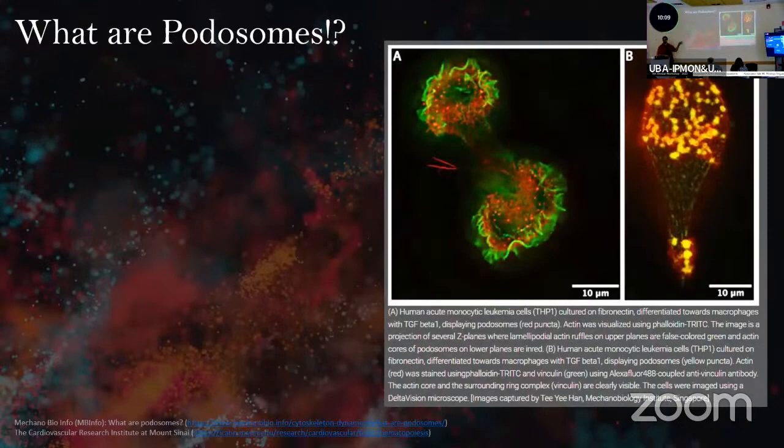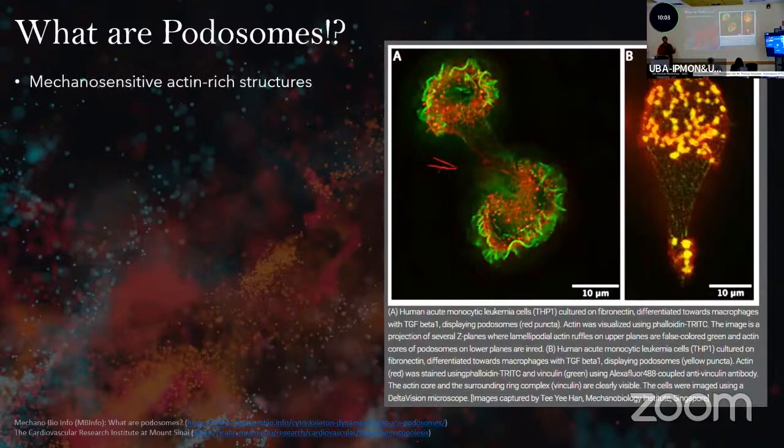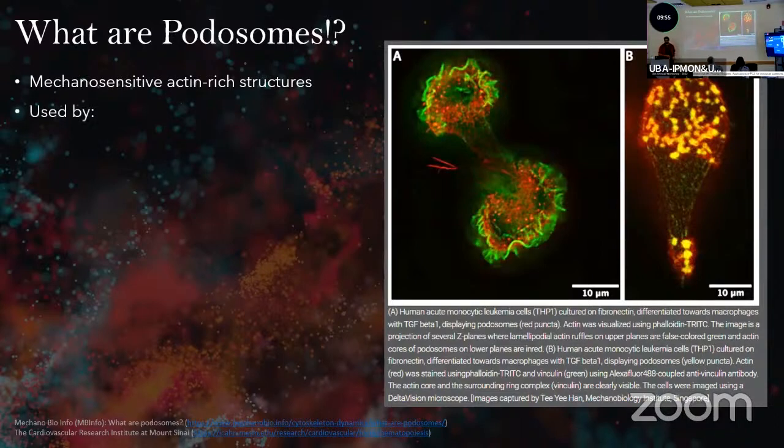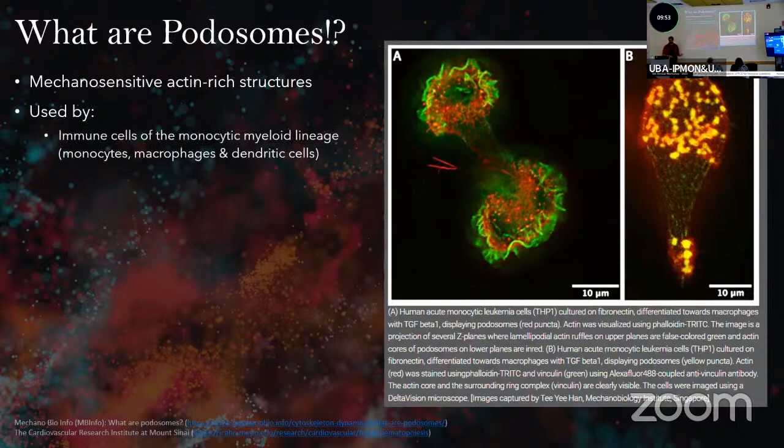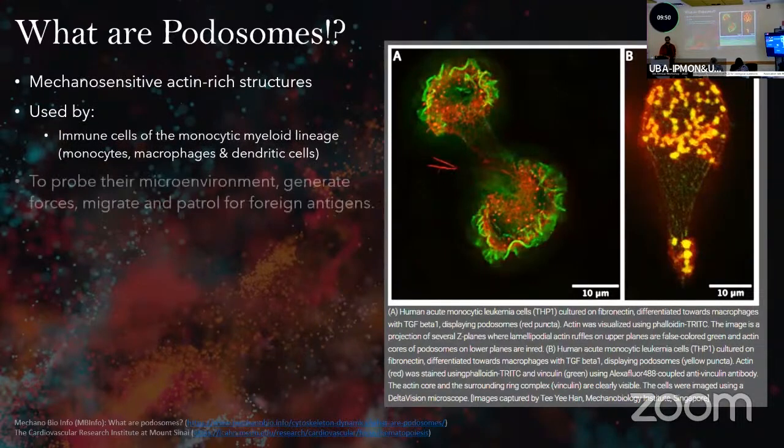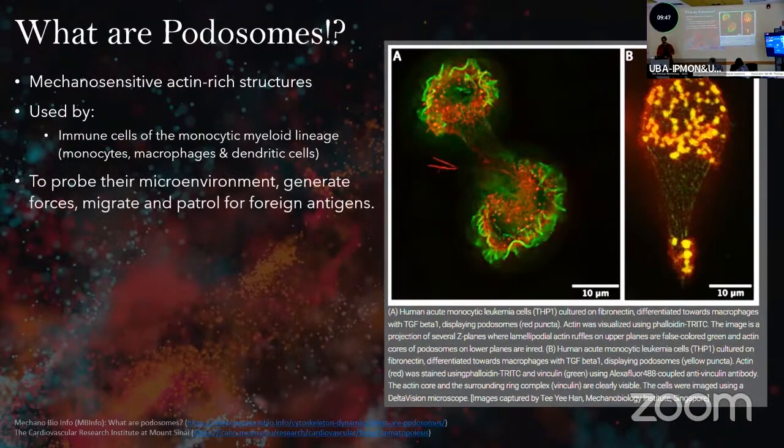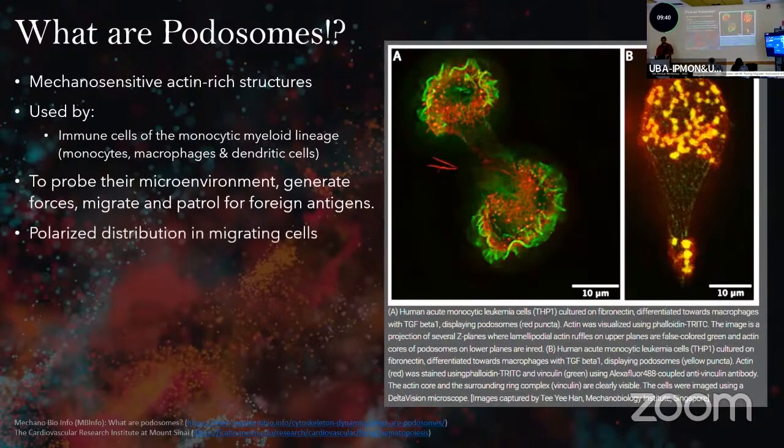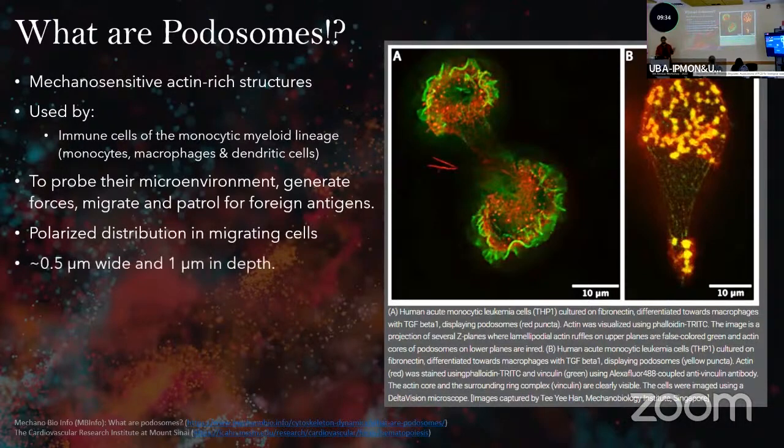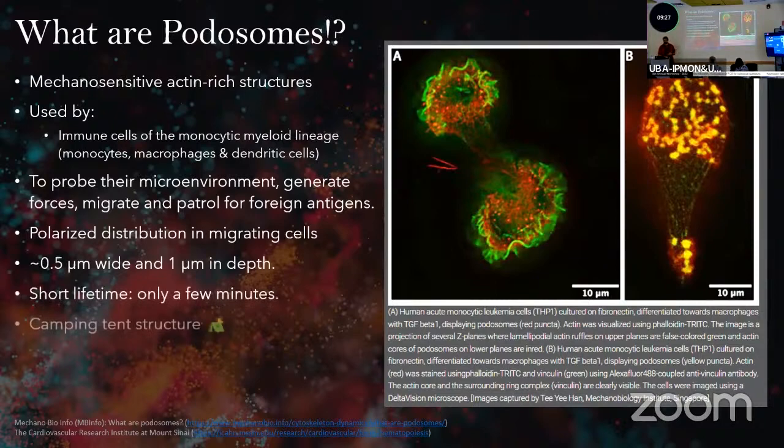What are even podosomes? Podosomes look something like this—these tiny dots at the bottom of the cells. They're actin-rich structures that are mechanosensitive. We talked about how important the stiffness of the substrate is for cells. They're used by immune cells of the monocytic myeloid lineage—monocytes, macrophages, and dendritic cells—to probe their environment and see how much stiffness it resists their pushing, generate forces, and patrol for different antigens. They have a polarized distribution in migrating cells. They're around 500 nanometers wide and one micron in depth, with a very short lifetime.